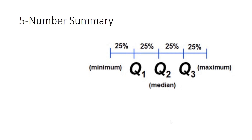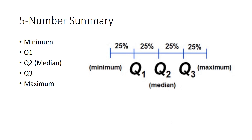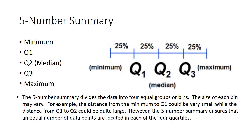A five-number summary consists of a minimum value, Q1, Q2 (or the median), Q3, and the maximum value. The five-number summary divides the data into four equal groups, or bins. The size of each bin may vary — for example, the distance from the minimum to Q1 could be very small, while the distance from Q1 to Q2 could be quite large. However, the five-number summary ensures that an equal number of data points are located in each of the four quartiles.